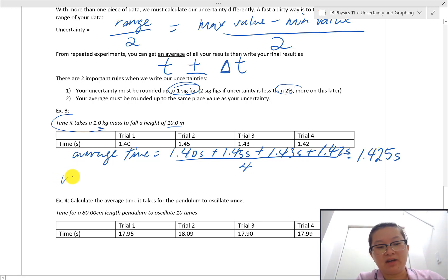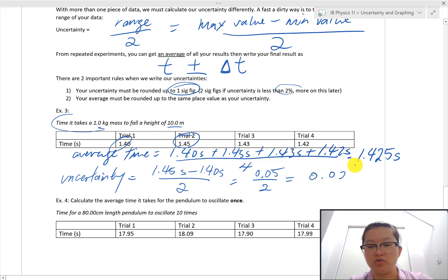I'm going to calculate my uncertainty, which is the largest data value here, which is 1.45 minus my smallest, which is 1.40. And I'm going to divide that by two, which is going to be 0.05 divided by two, and that's going to be equal to 0.025. And because it's an uncertainty, I have to round this uncertainty to one significant figure. So rounding this one up, I get 0.03 because that's a five. That's my uncertainty.